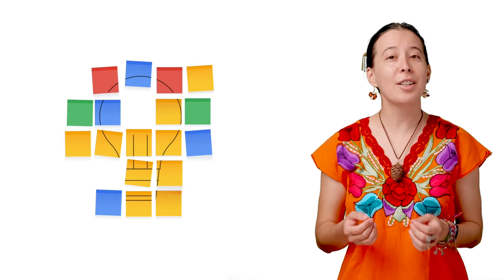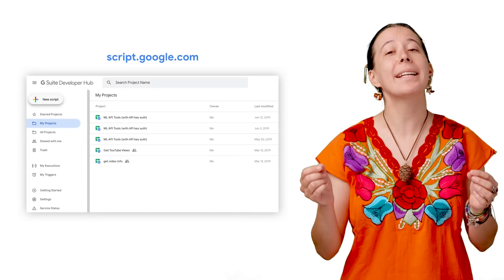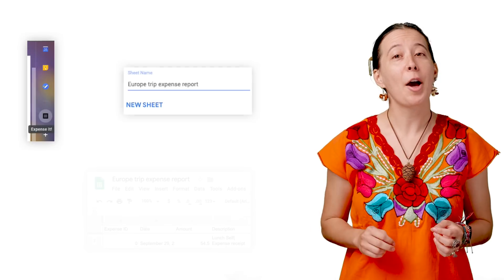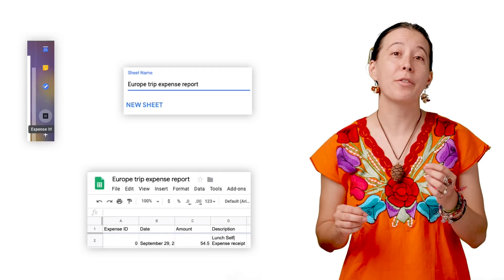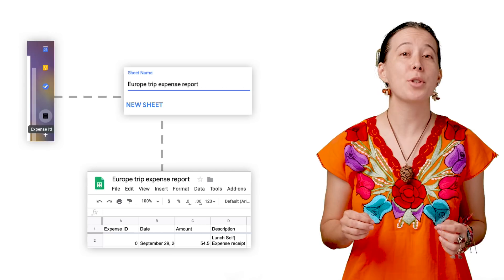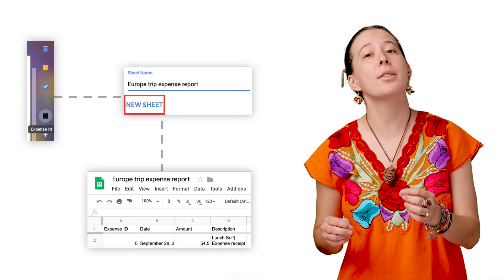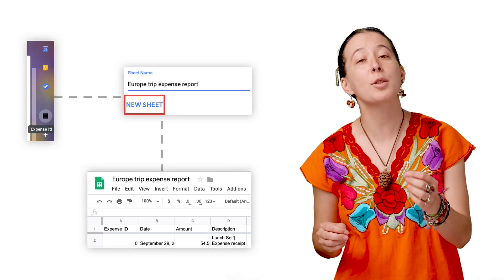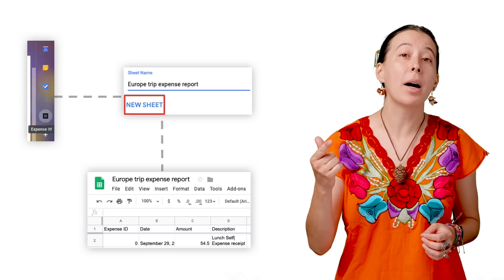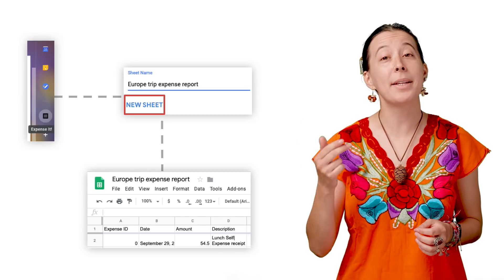I would like to call out two interesting things about this lovely app. For one, the script is not bound to a Google Sheet — therefore, it's called a standalone script. And second, upon clicking the add-on when viewing an email with an expense, you have the option to create a new spreadsheet, because the script uses the spreadsheet service, which has built-in actions to create, modify, or update a sheet.